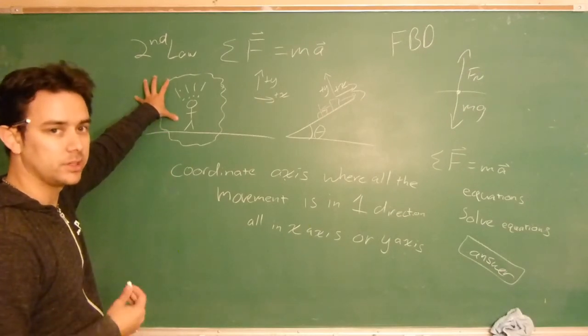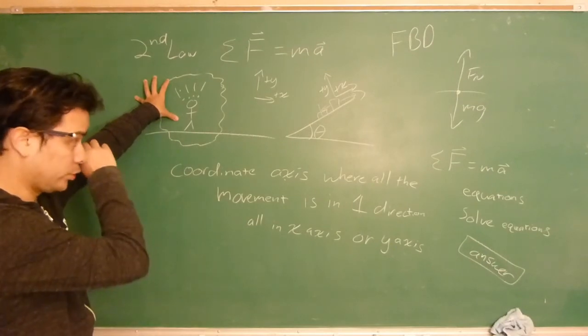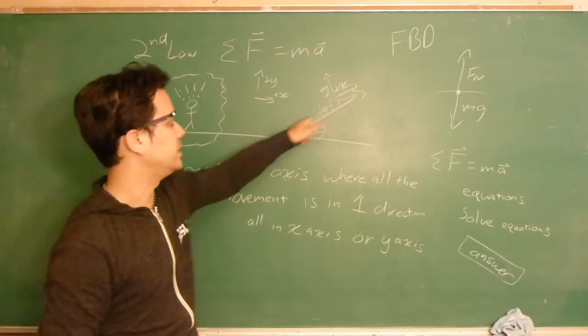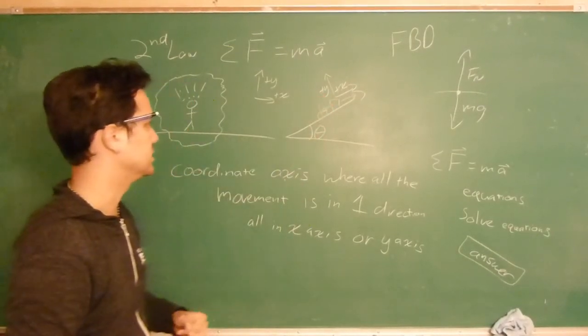You draw your picture so that it's easy to imagine and keep track of everything that's happening to it. When you draw your picture, you can get a good idea of the direction of any motion, and that lets you set up your coordinate system.